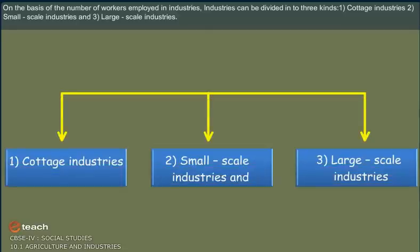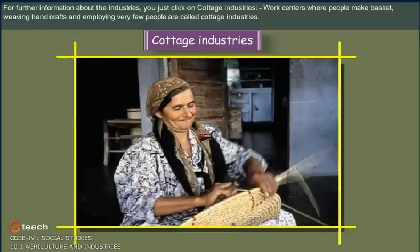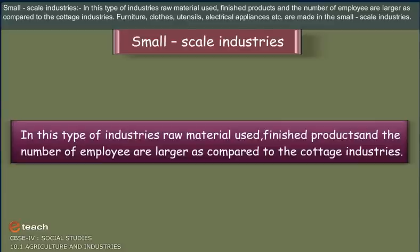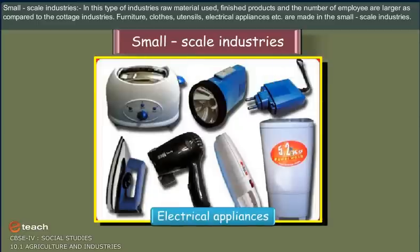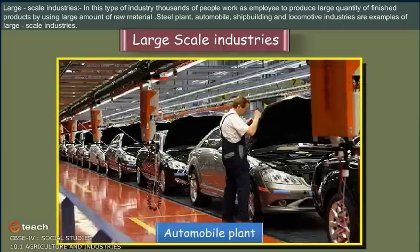On the basis of the number of workers employed, industries can be divided into three kinds: cottage industries, small-scale industries, and large-scale industries. Cottage industries are work centres where people make baskets, weaving, handicrafts, employing very few people. In small-scale industries, raw materials, finished products, and the number of employees are larger than cottage industries — furniture, clothes, utensils, and electrical appliances are made here. In large-scale industries, thousands of people work to produce large quantities of finished products; examples include steel plants, automobiles, shipbuilding, and locomotive industries.